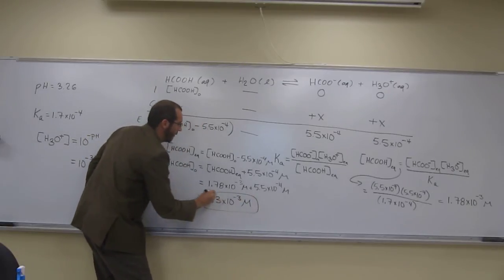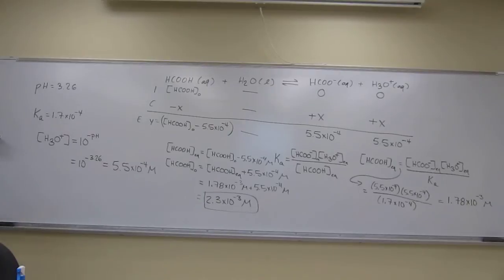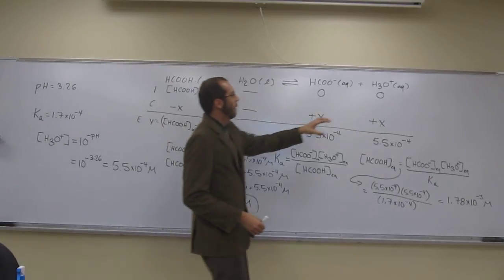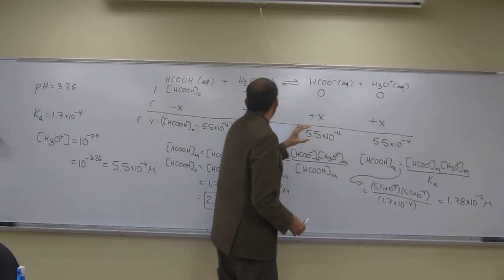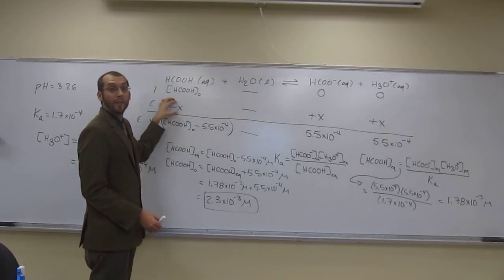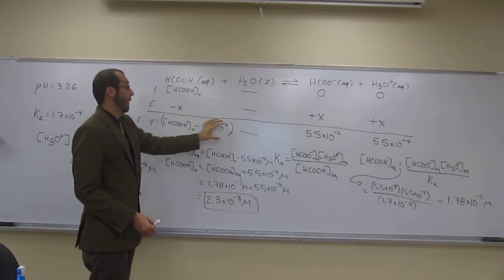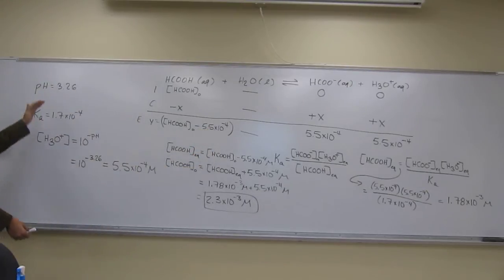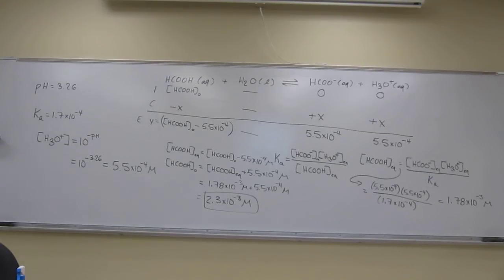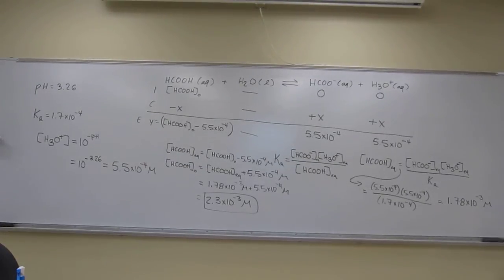Hopefully that doesn't confuse you. Are there any questions on that one? It's kind of involved, but it's more like: if you know what the hydronium concentration is, then you know what x is, and from the ICE table you know the equilibrium concentration of formic acid, and then you know the original concentration. All you need is the pH and the Ka to figure it out. Good job, guys.